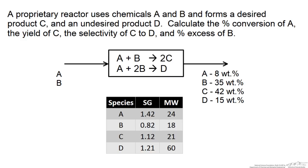In this problem we have a reactor with two reactions. One: A plus B goes to 2C, and the other: A plus 2B goes to D. We are given information about each species in terms of specific gravity and molecular weight. We are told that the reactor outlet has a composition of 8 weight percent A, 35 weight percent B, 42 weight percent C, and 15 weight percent D.